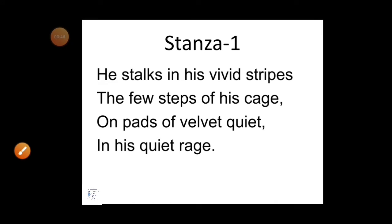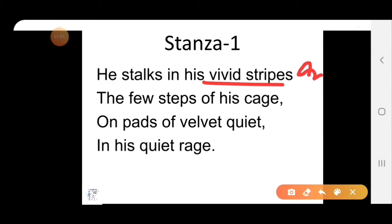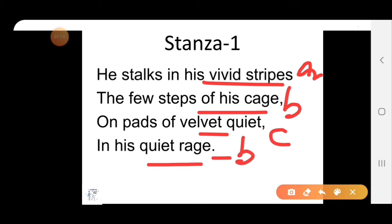Now we will read stanza 1 and before the explanation, we will see the rhyming scheme given in this stanza. 'He stalks in his vivid stripes, the few steps of his cage, on pads of velvet quiet, in his quiet rage.' The rhyming scheme of this stanza is A, B, C, B. Actually, the whole poem consisting of 5 stanzas has a consistent rhyming scheme of A, B, C, B.